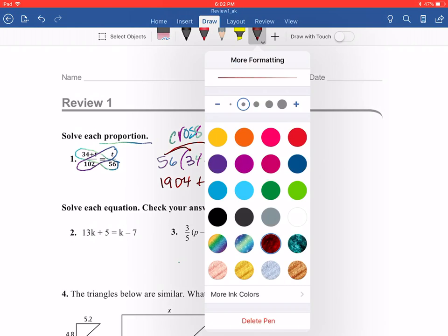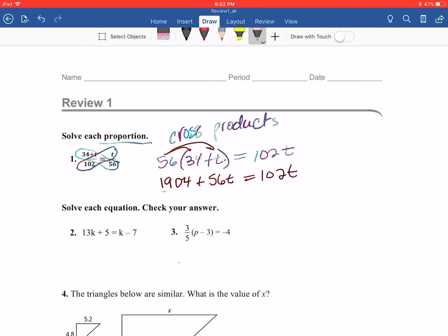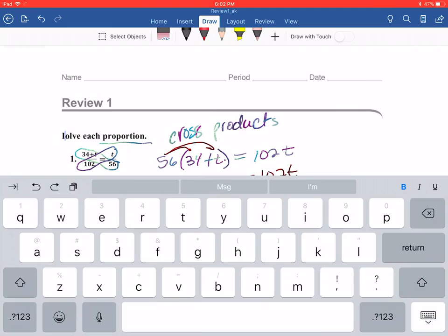Now I need to combine like terms. I have a constant and I have a variable and I have a variable on the other side. I'm going to combine all of my variables on one side and all my constants on the other. These two terms here are being added, so I'm going to do the inverse of addition, which is going to be subtraction. So I'm going to subtract 56T.